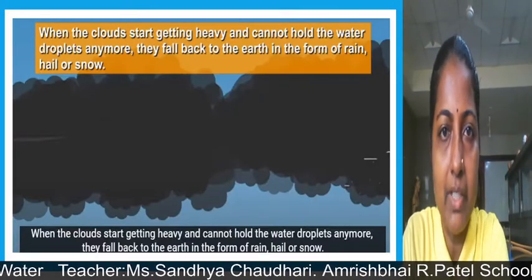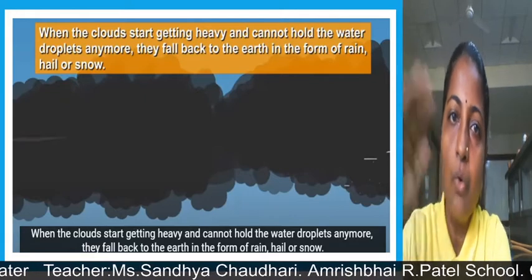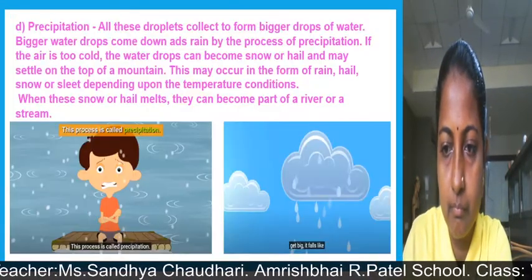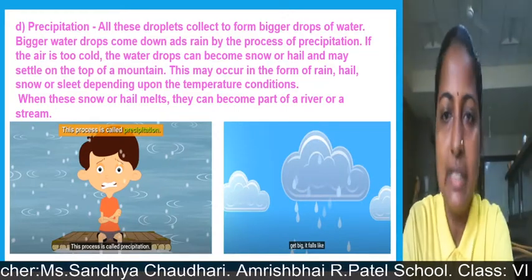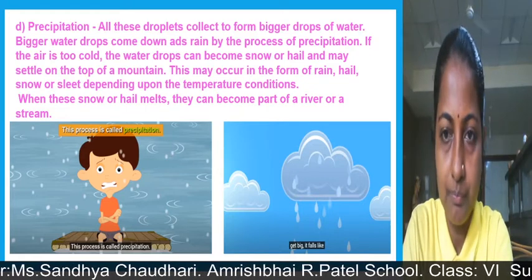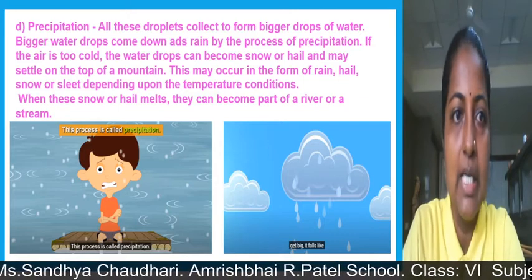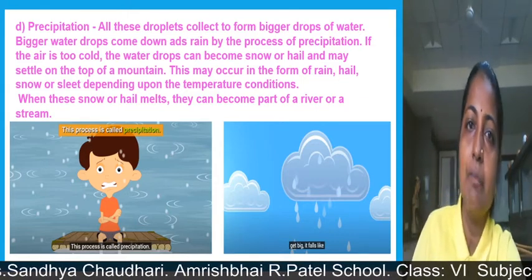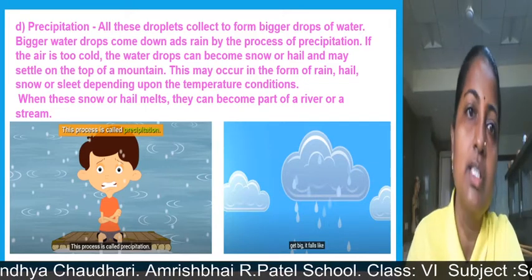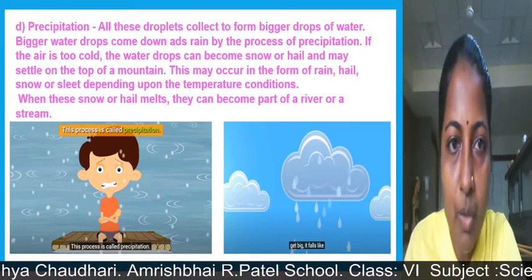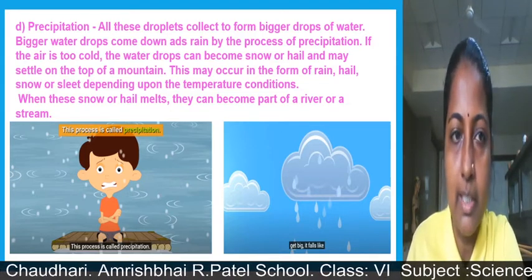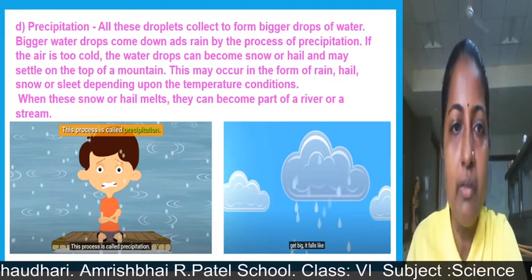When clouds start getting heavy and cannot hold the water droplets anymore, they fall back to the earth in the form of rain, hail, or snow. This is precipitation. All the droplets collect to form bigger drops of water, and when they become heavy they come down as rain. If the air is too cold, water drops can become snow or hail and may settle on top of mountains, depending upon temperature conditions. When snow or hail melts, it can become part of a river or stream.